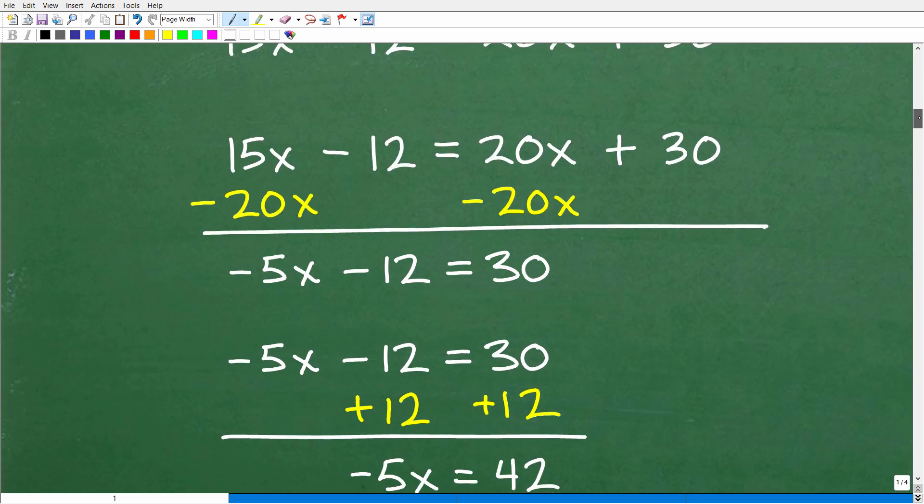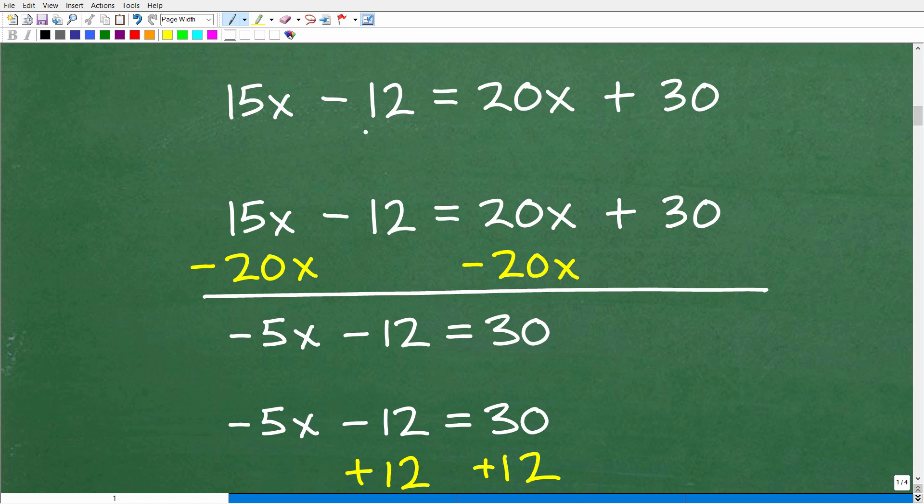All right, so now let's go ahead and solve this equation right here. 15x - 12 = 20x + 30. Of course, I'm assuming you know how to solve these type of basic linear equations in algebra. If you don't, go ahead and follow through.